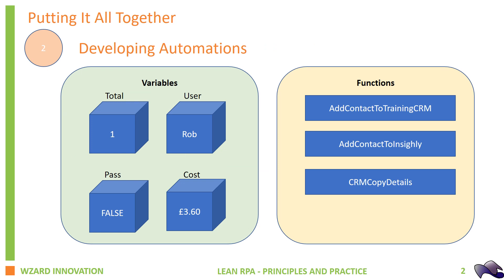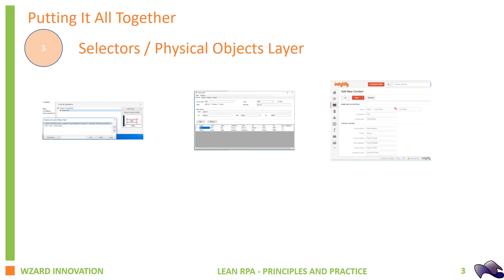When developing automations, two of the key learnings were variables and functions. We looked at variables — boxes that you can store information in — and functions, which allow you to write your automations into logical structures so that they are easy to maintain and easy to understand.